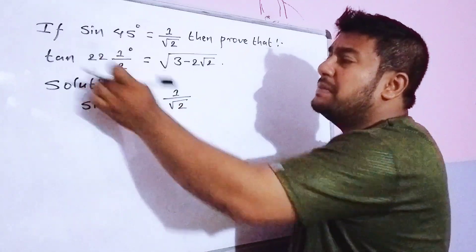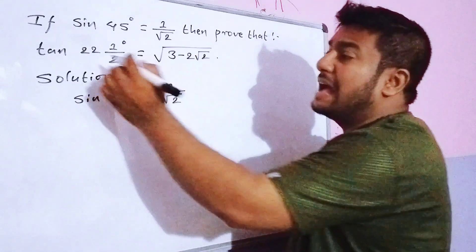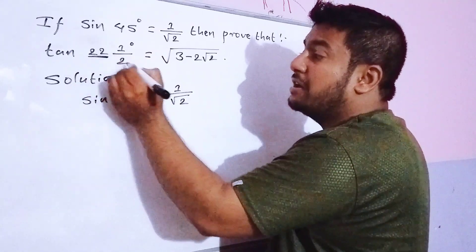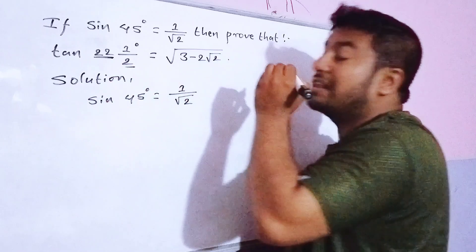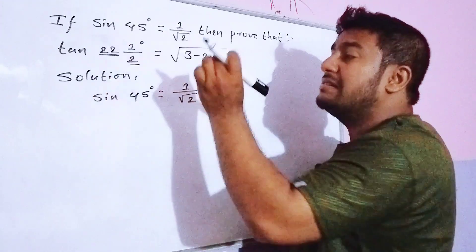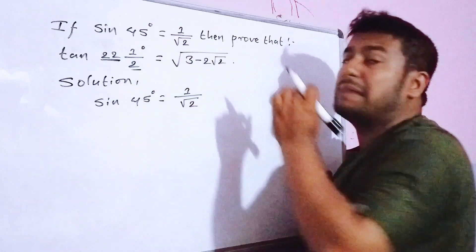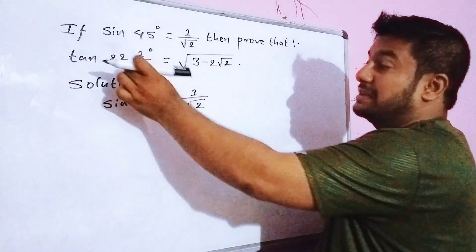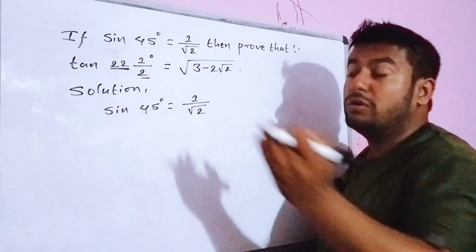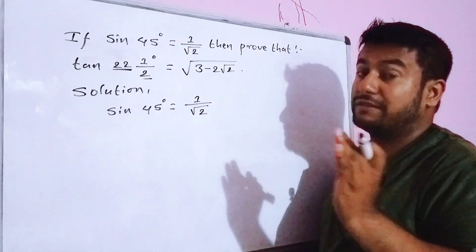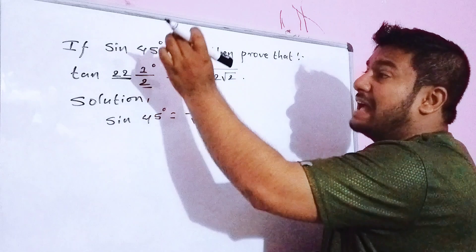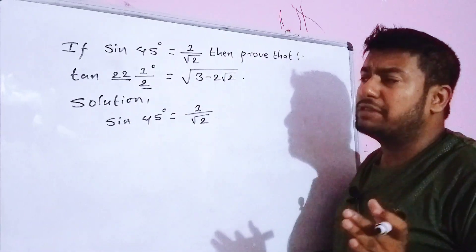This is a mixed fraction. For a mixed fraction, the whole number multiplied by the denominator is added to the numerator. So 22 into 2 is equal to 44, and 44 plus 1 is equal to 45. So 22 and 1/2 degree equals 45/2 degree.